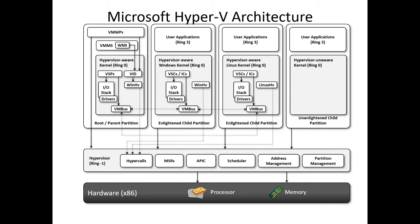Child partitions are presented a virtual view of resources. A virtual device request is redirected either via VMBus or the hypervisor to the device in the parent partition, which handles these requests. The VMBus is a logical inter-partition communication channel.